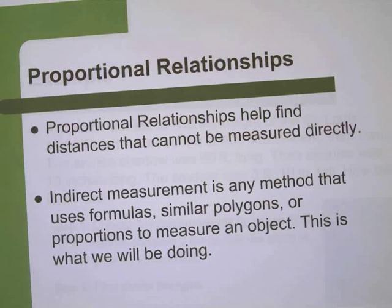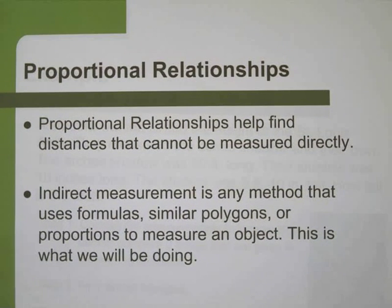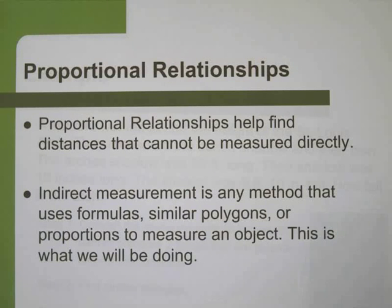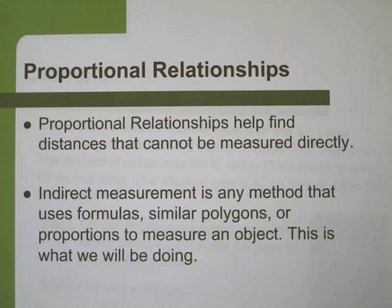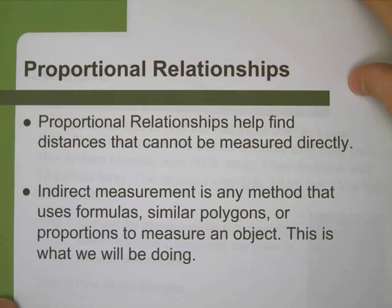First thing to understand: we can use proportional relationships. If we have similar shapes and we know that this proportion exists, we can solve for an unknown side length - and we can do that in real life too. We can make indirect measurements. An indirect measurement is any method where we use a formula, like a proportion or similar shapes, to solve for an unknown like a distance. How tall is a tree? You're not going to hold up a tape measure and measure the height of a tree. Instead, maybe we can use an indirect way to find the height of the tree, like maybe using its shadow.